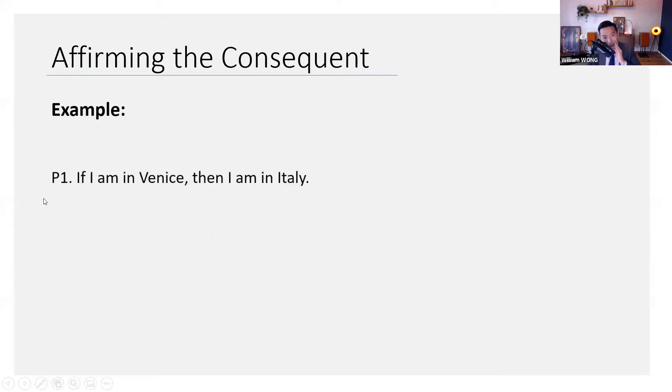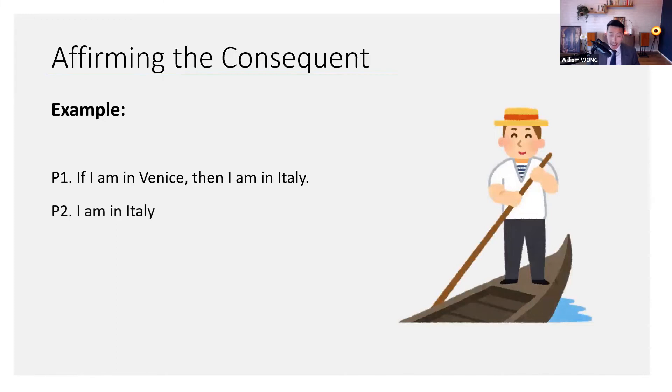Here's an example. If I'm in Venice, then I'm in Italy. I am in Italy, that is to say, you're affirming the consequent. Therefore, I am in Venice. Well, think about that. That's not right, is it?